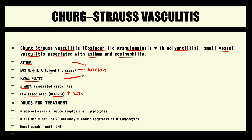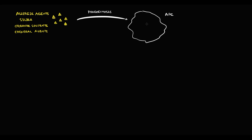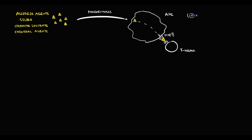To explain all these features we have to know the pathogenesis. Our organism frequently comes in contact with different allergic agents such as silica, organic solvents, and chemical agents. When particles of allergic agents enter our organism, antigen-presenting cells immediately phagocytose them and present them on MHC-2 receptors to T-helpers. In normal conditions, T-helpers do not see anything dangerous in these allergic particles and thereby do not trigger inflammation.